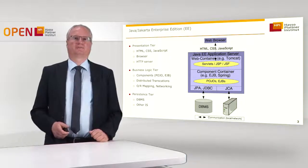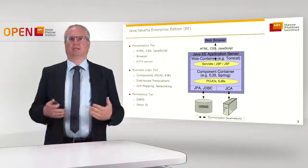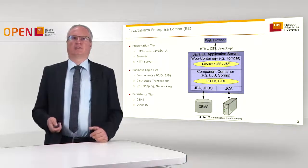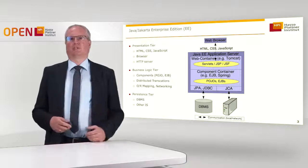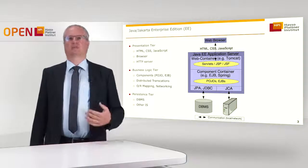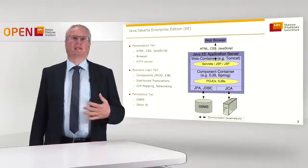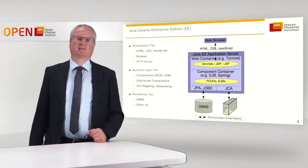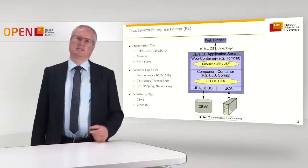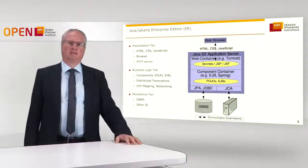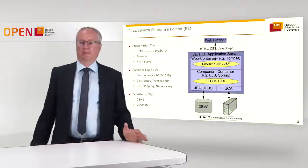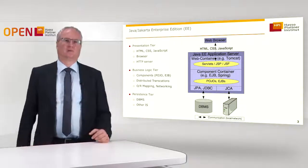The client is typically a web browser, and we communicate using HTTP with the application server. The application server has at the top level a web container — for example, Apache Tomcat — to implement the web profile of the Java EE specification, containing technologies to create dynamic web pages like Java Server Pages, Java Server Faces, and Servlets. Below that is the component container, which is very specific to Java EE.